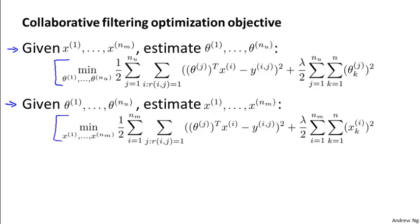One thing you could do is actually go back and forth — randomly initialize parameters and then solve for theta, solve for x, solve for theta, solve for x. But it turns out there's a more efficient algorithm that doesn't need to go back and forth between x and theta, but can solve for theta and x simultaneously.